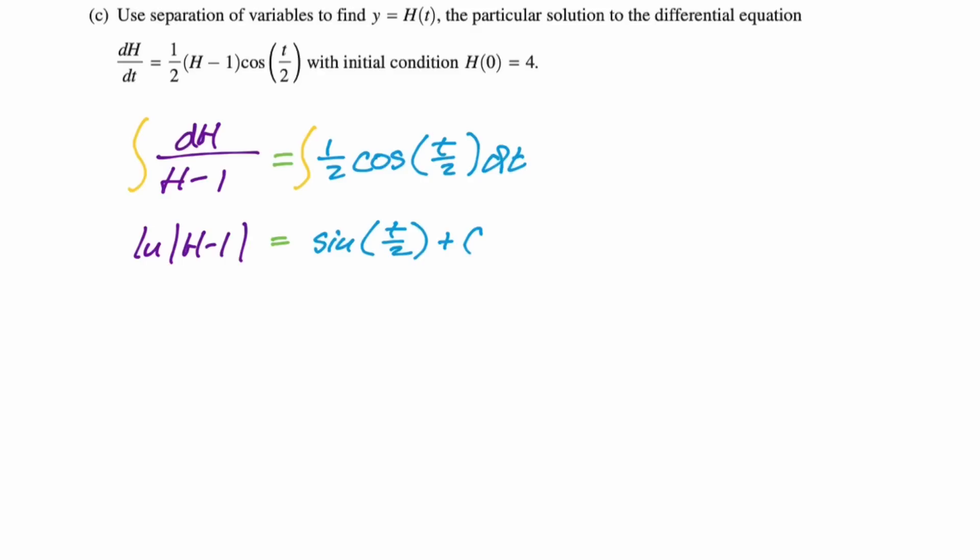So integrating this gives you sine of t over two. Plus c goes on the side with the independent variable, which in this case is t, so sine of t over two plus c. If your dependent variable is inside a natural log, you want to exponentiate before you solve for c. So here we're going to get h minus one is c e to the sine of t over two. So I have a bunch of videos where I explain what's exactly happening there. You should definitely look them up if you're not sure.